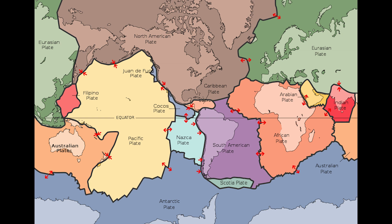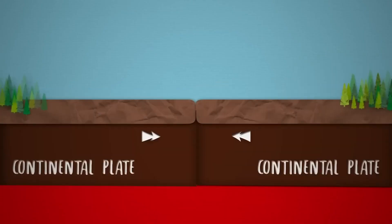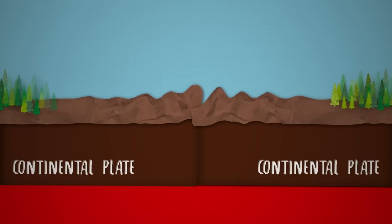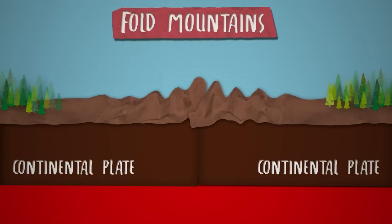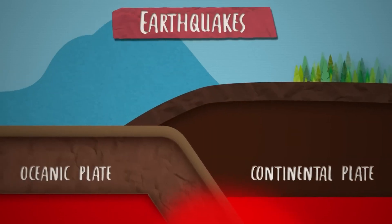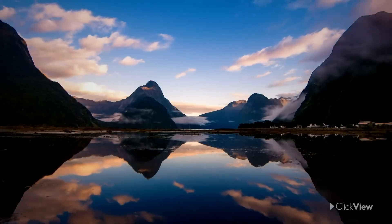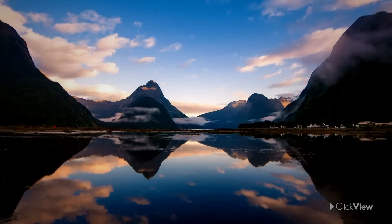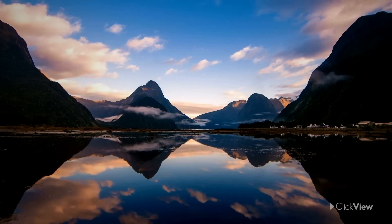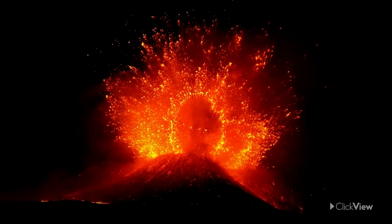For example, when two plates converge, or move towards each other, one plate may slip under the other, causing a buildup of pressure that is eventually released in an earthquake. In addition to tectonic earthquakes, there are also earthquakes caused by volcanic activity, underground explosions, and human activities such as the construction of large dams.